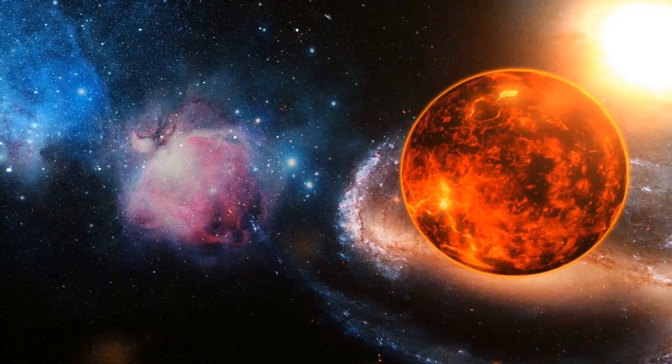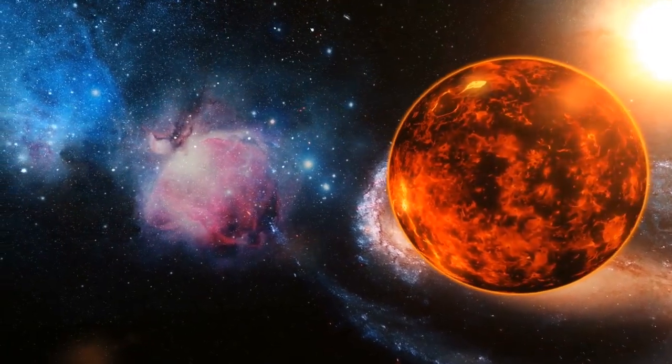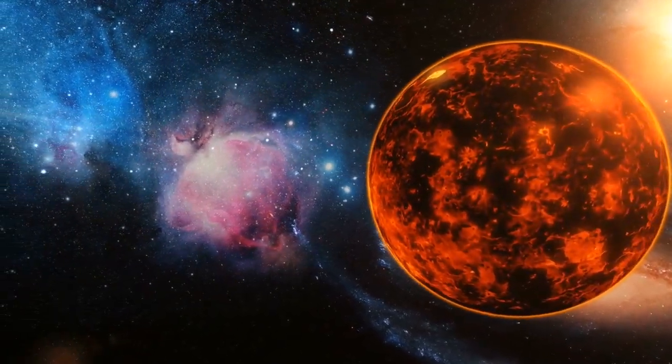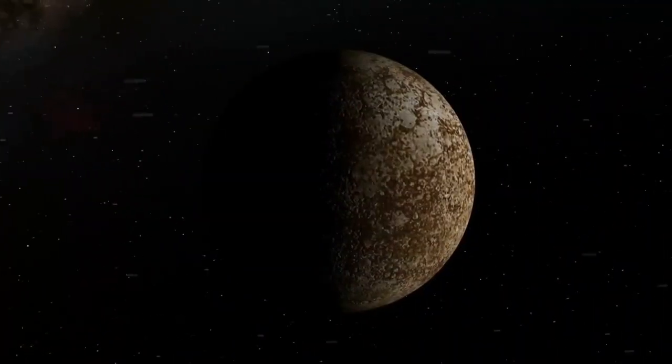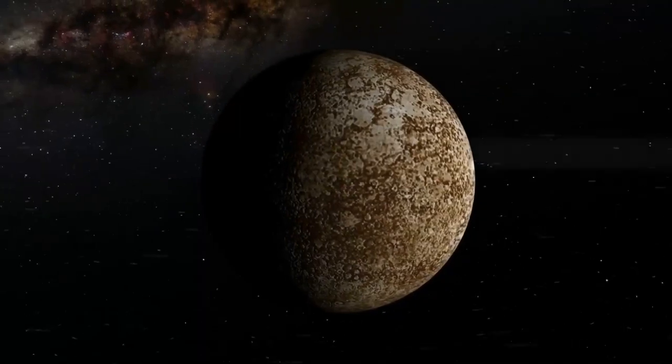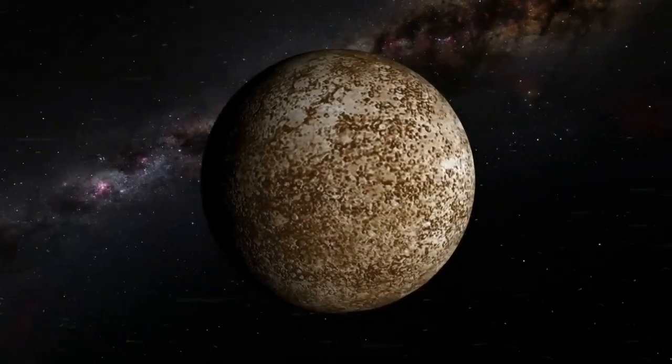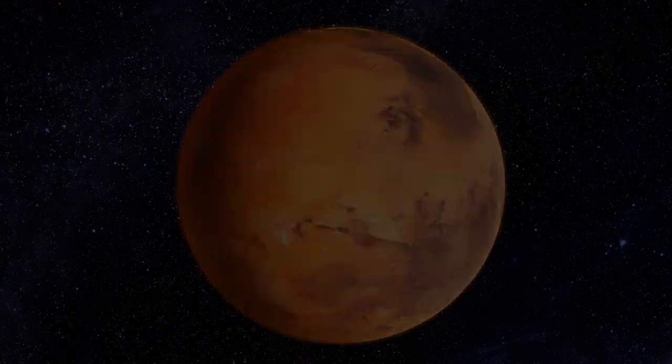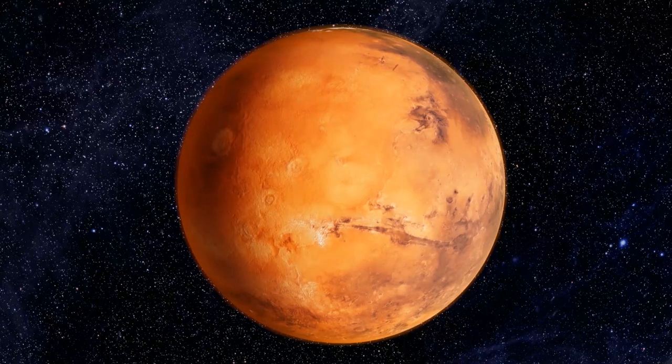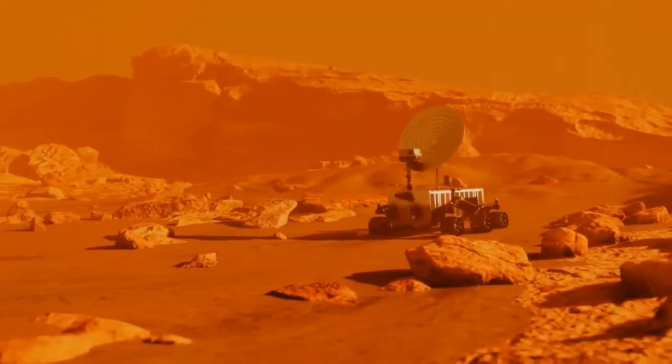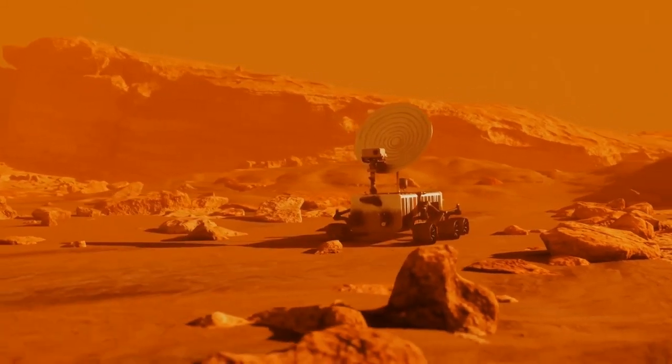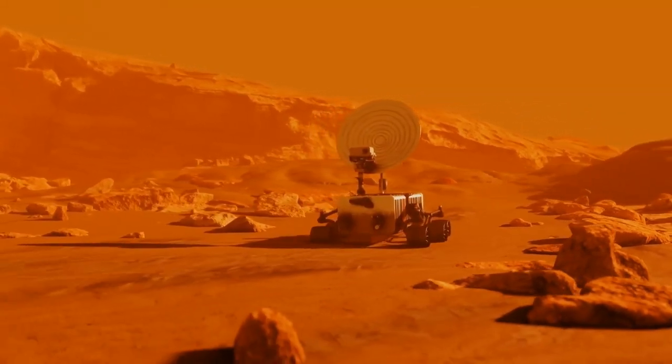However, evidence suggests that the sun used to be much dimmer. Venus may have once had oceans, but its proximity to the brightening sun caused the liquid water to evaporate. The escape of liquid water from Venus' surface may have directly led to the planet's current inhospitable, dense atmosphere. Mars, which is too far from the sun to be in the habitable zone, once had flowing liquid water.